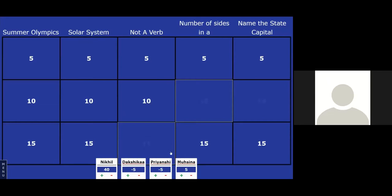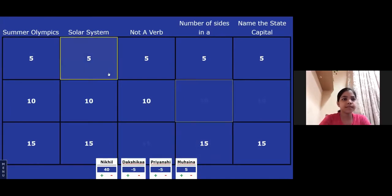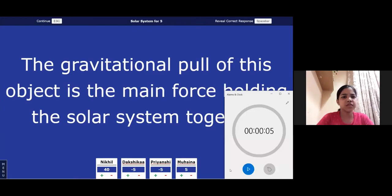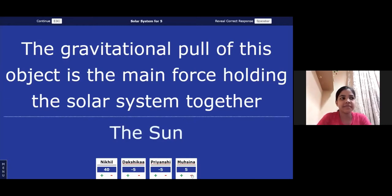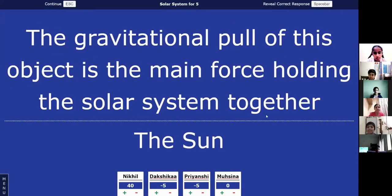Musina, let's make a choice. Sir, solar system for five points. Solar system for five points. Playing it safe. Let's see if that works out for you. The gravitational pull of this object is the main force holding the solar system together. Of planets. What is that object? It's planets. No. The answer is sun. So, the gravity of the sun is what is keeping the solar system together. So, you get minus five.